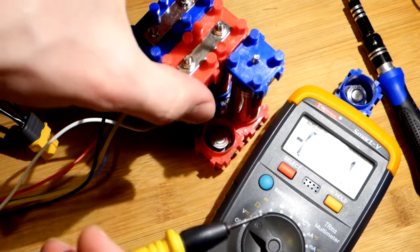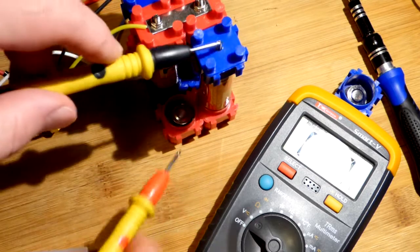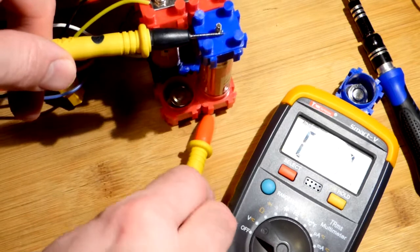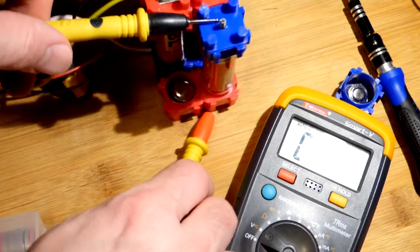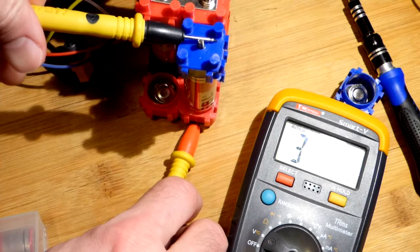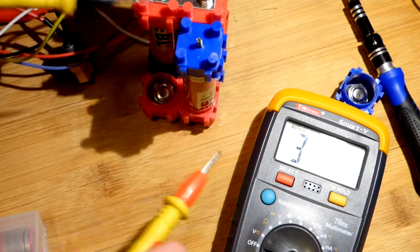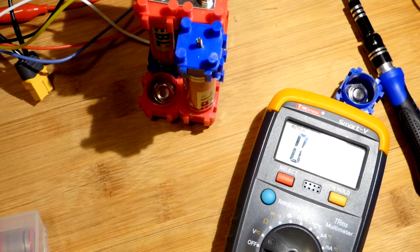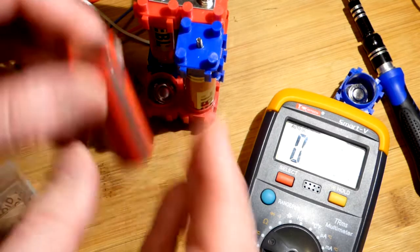Let's get the multimeter and make sure we have a voltage. This is not attached to anything yet so we should just have the voltage of one battery. There we go, 3.65.